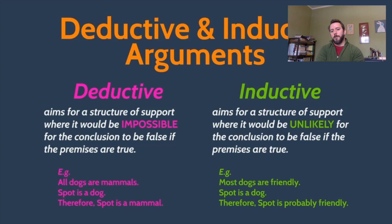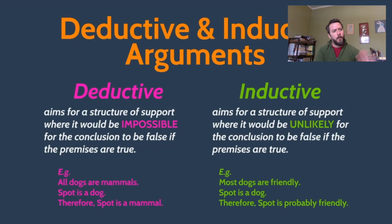Depending on what we mean by 'most,' that could yield a very likely conclusion. If 99.99% of dogs are friendly and Spot is a dog, it's very likely that Spot is friendly. If 'most' means only 51%, then maybe it's not as likely. The structure of an inductive argument isn't going for that airtight certainty of a deductive argument — it's going for a structure where, if the premises are true, the conclusion is probably true. That inference is not as secure as a good deductive inference, but it might be more useful.